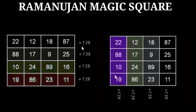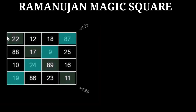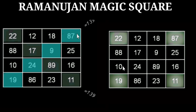Now if we add numbers along columns — the first column gives 139, the sum of all numbers in the second column is also 139, similarly the third and fourth columns always give 139. Now if we add the four diagonal numbers we get 139 again, and if we add the other diagonal we also get 139.